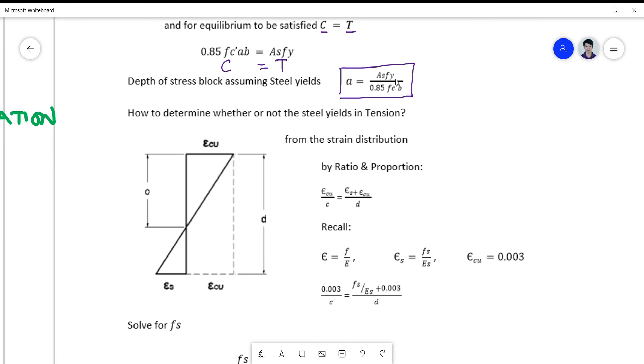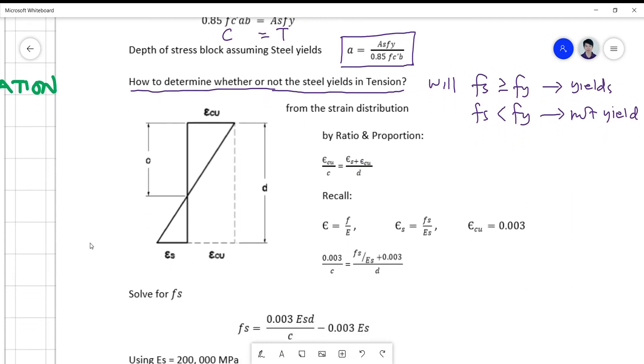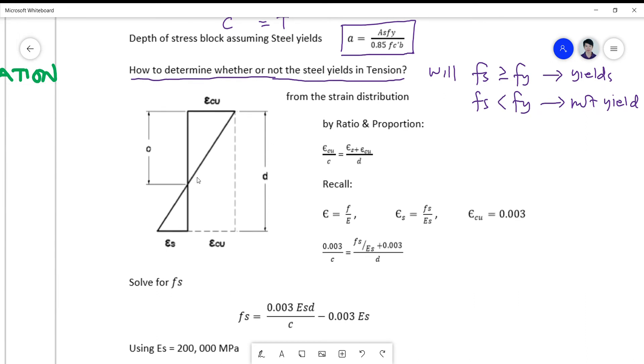So how do we make sure that your steel will yield in tension? So this is the first question we need to answer always when we are going to get the moment capacity. Will the tension of the steel reach its yield value fy? So will fs be equal to or greater than fy? So if fs is greater or equal, then the steel yields. If not, if it is less than, the steel will not yield.